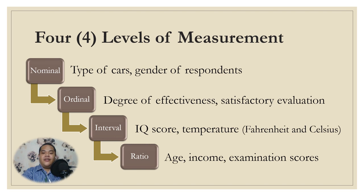Here are some examples of the levels of measurement. Nominal: type of course, gender of respondents. Ordinal: degree of effectiveness, satisfactory evaluation. Interval: IQ score, temperature in terms of Fahrenheit and Celsius. Ratio: age, income, examination scores.